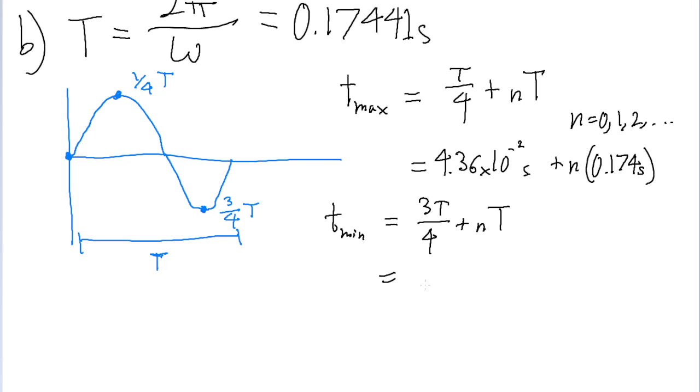So 3 multiplied by our period divided by 4, that turns out to be 1.31 times 10 to the power of negative 1 seconds, then plus n multiplied by 0.174 seconds.